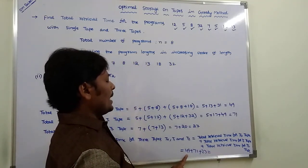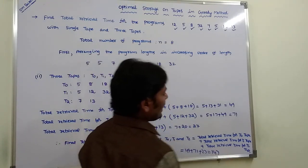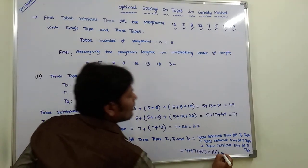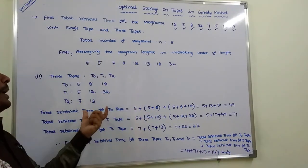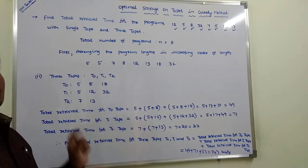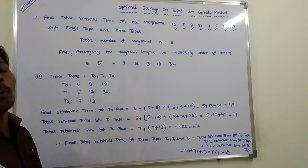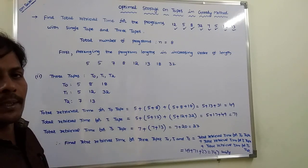So that is equal to 49 + 71 = 120, plus 27 = 147. Therefore, the final total retrieval time for 3 tapes is 147 units. In this way, we solve how to assign 8 programs for a single tape and multiple tapes (3 tapes). This is how we solve optimal storage on tapes for single tape and multiple tapes when we are given n number of programs.